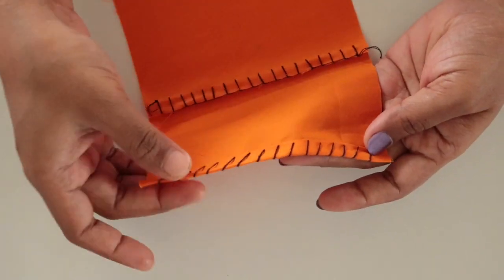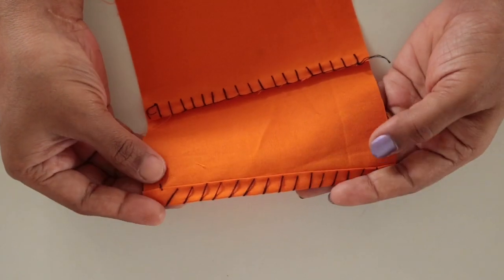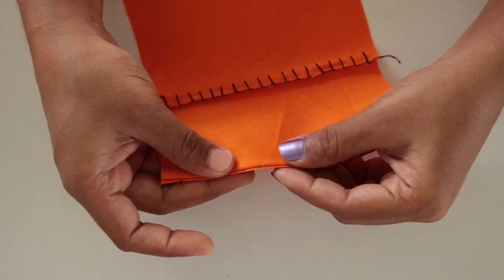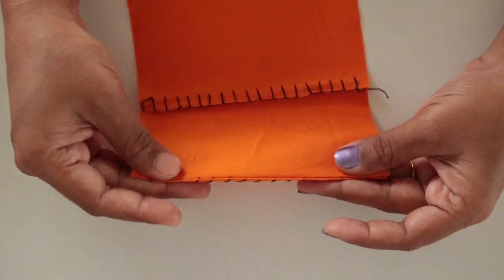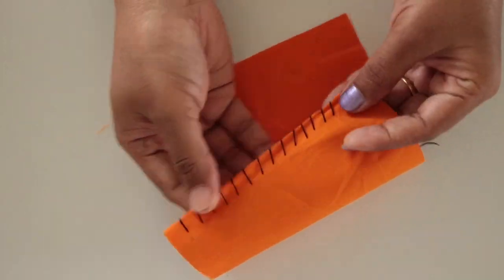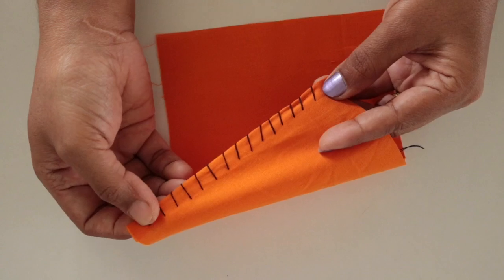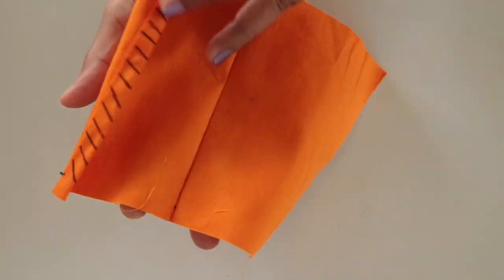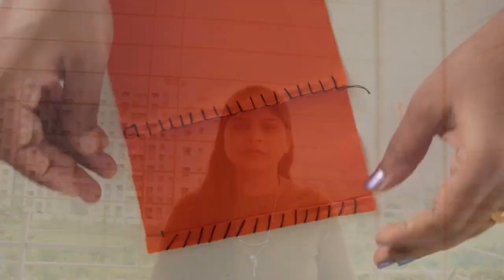So here's the finished edge. There's no raw edges coming from this. And from the back side it will look like this. So depending on the project you can use either stitch. So friends, thank you for watching today's tutorial.